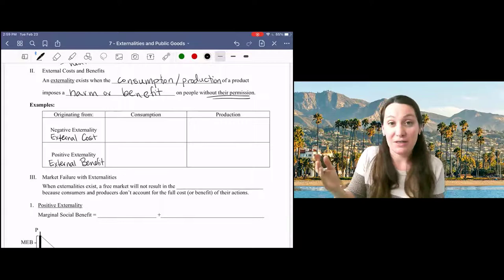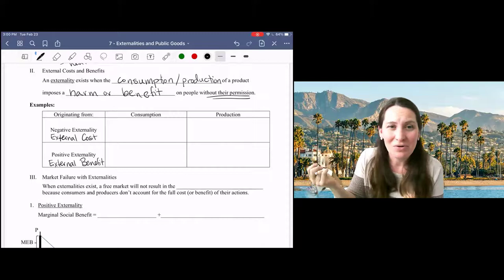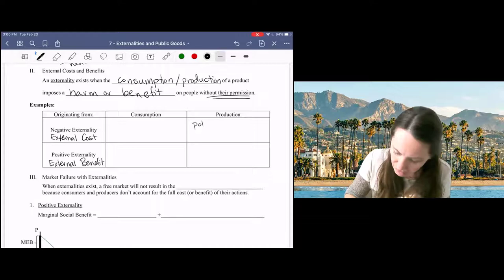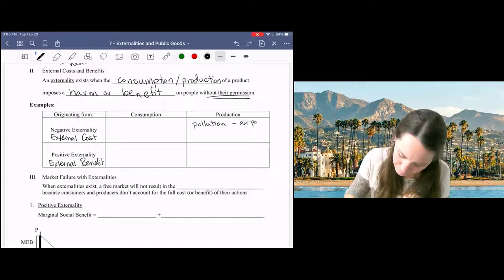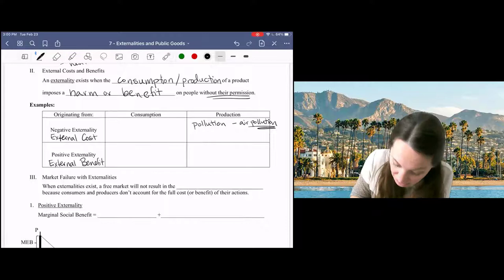So pollution, as we generally think about it, like air pollution from a factory, water pollution from fertilizer use in agricultural production, stem from the production of a product. Of course, there are other types of pollution that we might consider, like the exhaust that comes out of my car, which would be more in this consumption category.